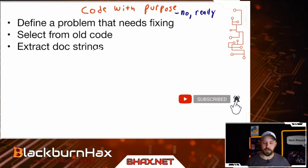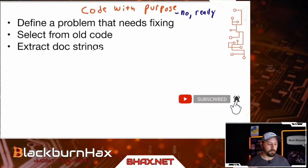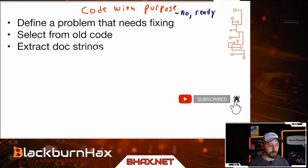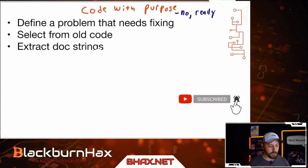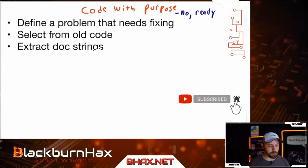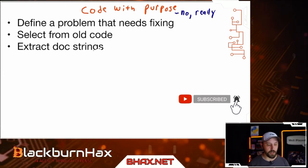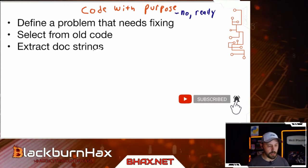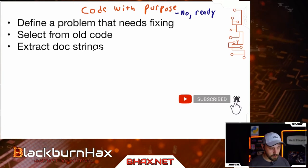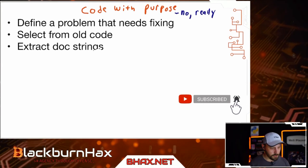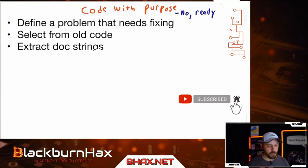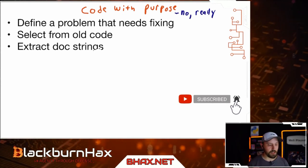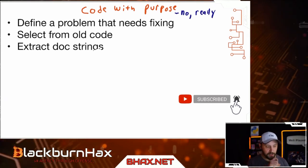Next, extract the docstrings. Sometimes you need to note information from the original author — where you got the code from. I'll go to the Stack Overflow page I got it from and copy the URL. In Python, you add documentation strings using triple quotes — open with triple quotes, close with triple quotes — and you can type anything you want in between. I'll include the source URL so I know where to go if something about the code is unclear.